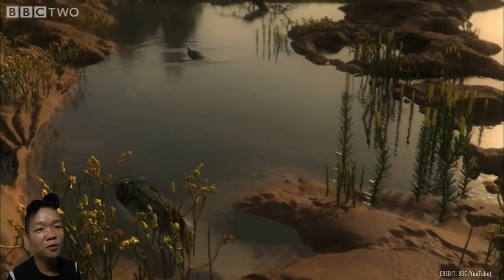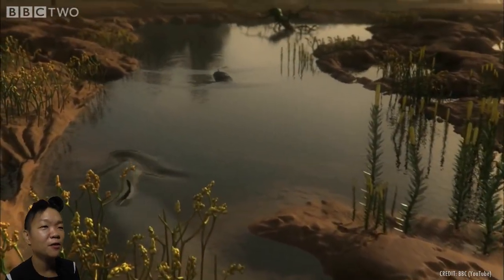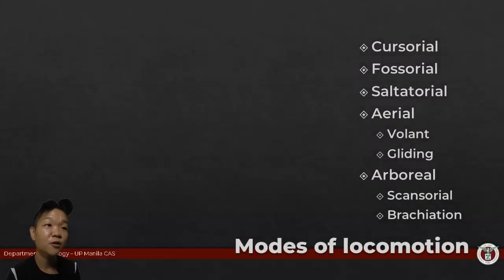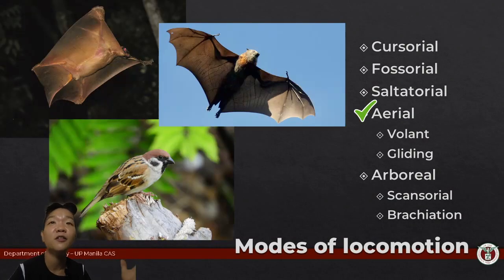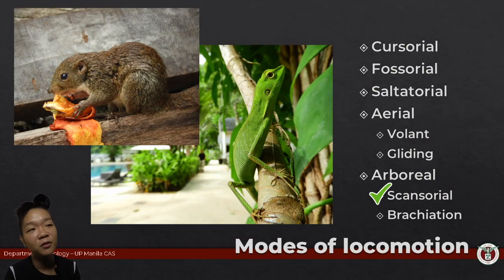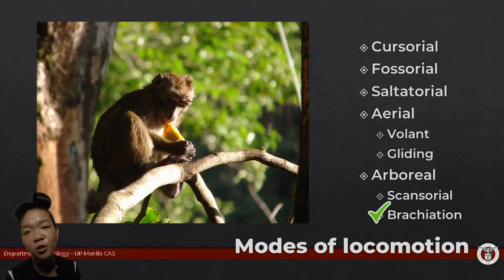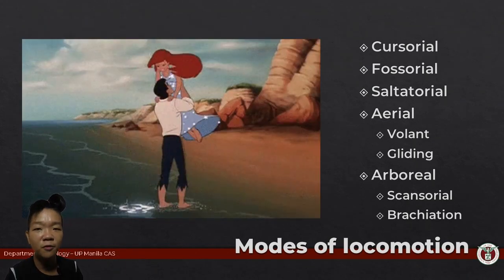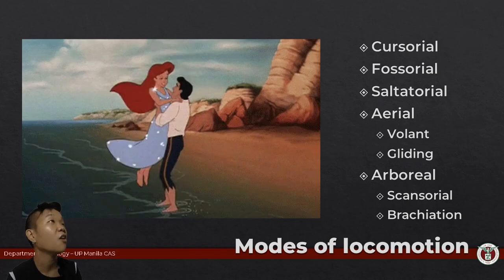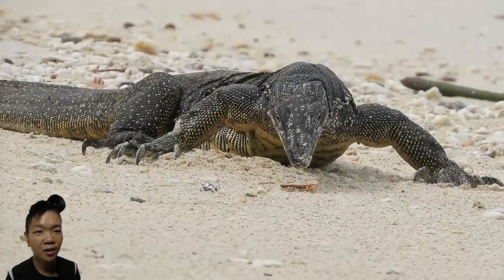From the humble, lobed-fin fish that first emerged onto land, we have diversified into flying, climbing, running, jumping, burrowing, and tree-swinging forms. No wonder the Little Mermaid wanted to trade her fins for legs — all the possibilities! The differences in the ways tetrapods move will require modifications to the girdles and limbs, obviously.